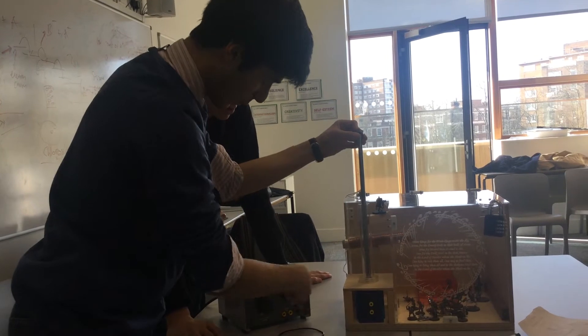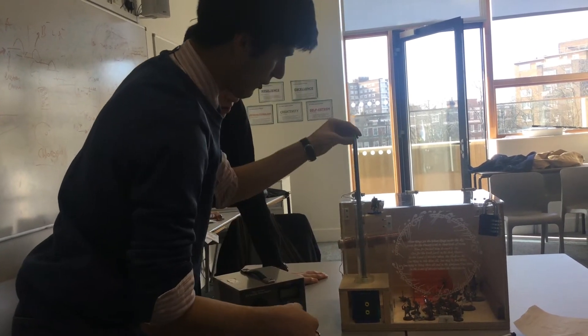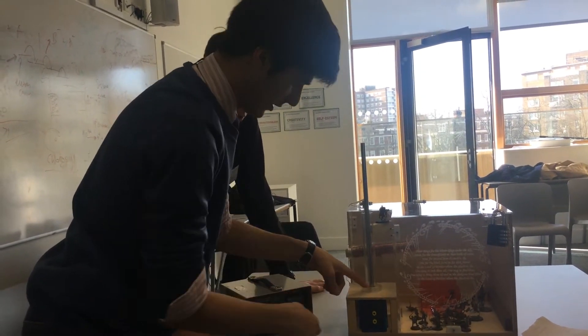And the reason for that is, this is an electromagnet, and when I do power it up, the iron ring will just be attracted to the magnet, therefore trapping, as we said, trapping this ring.